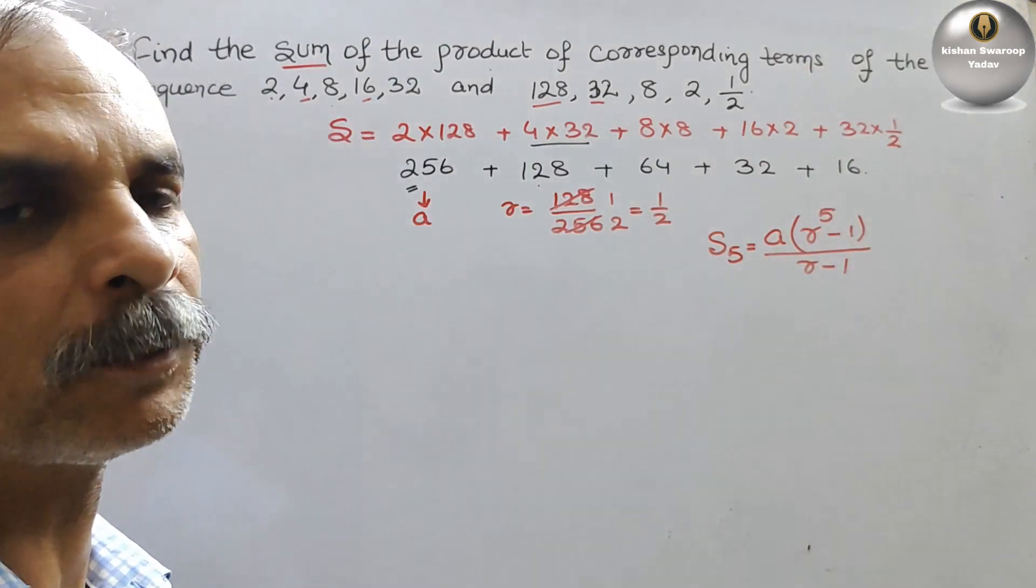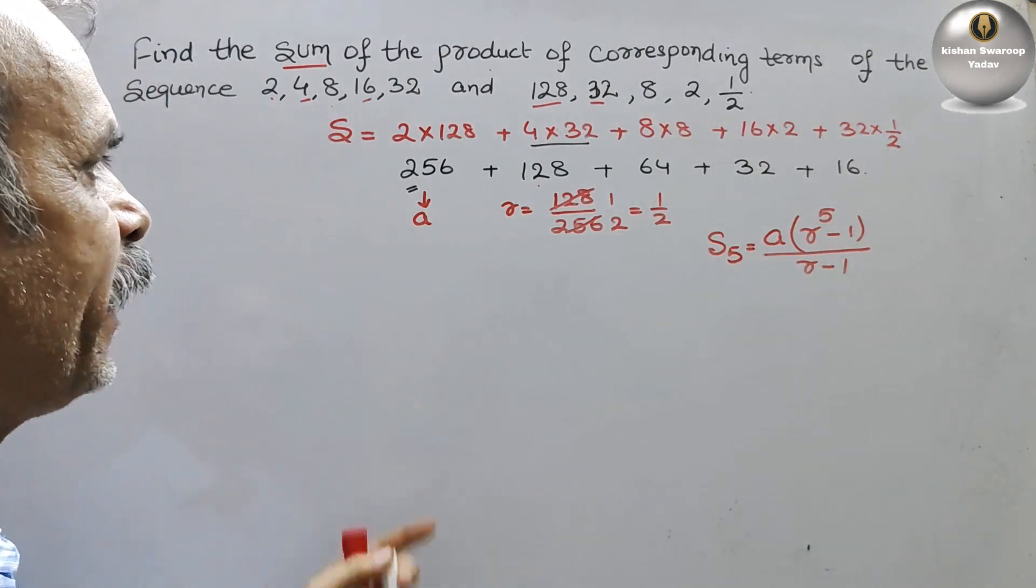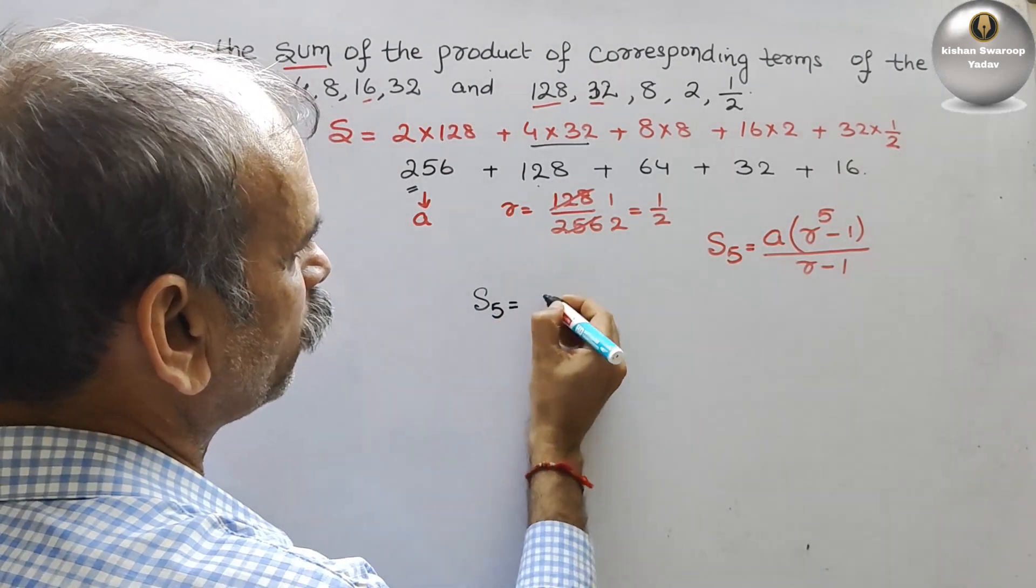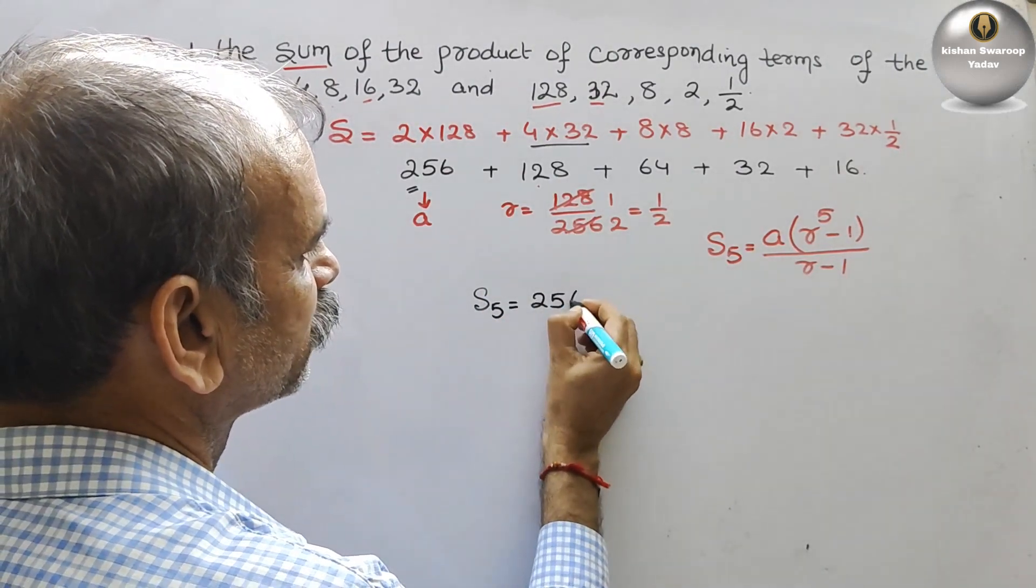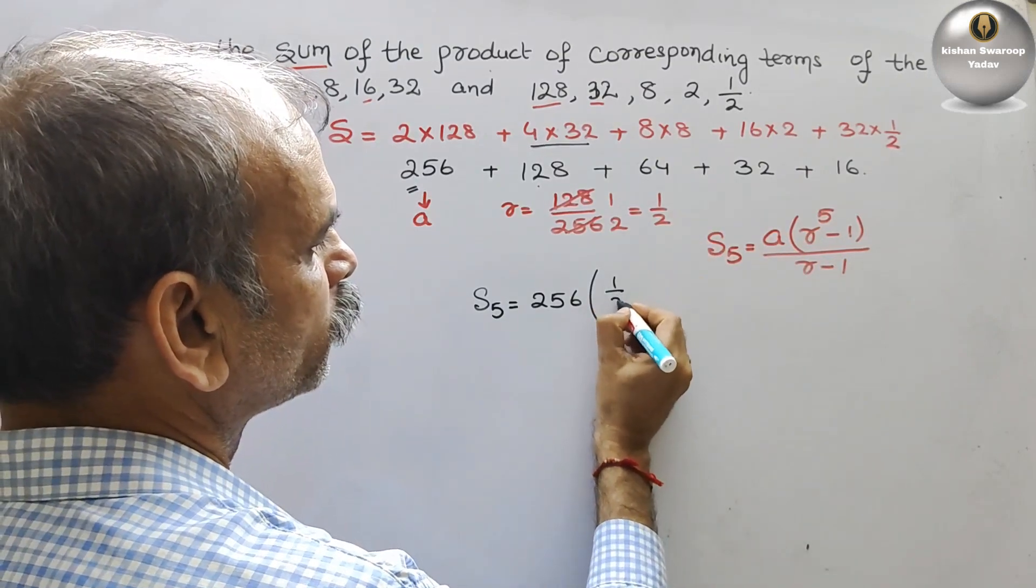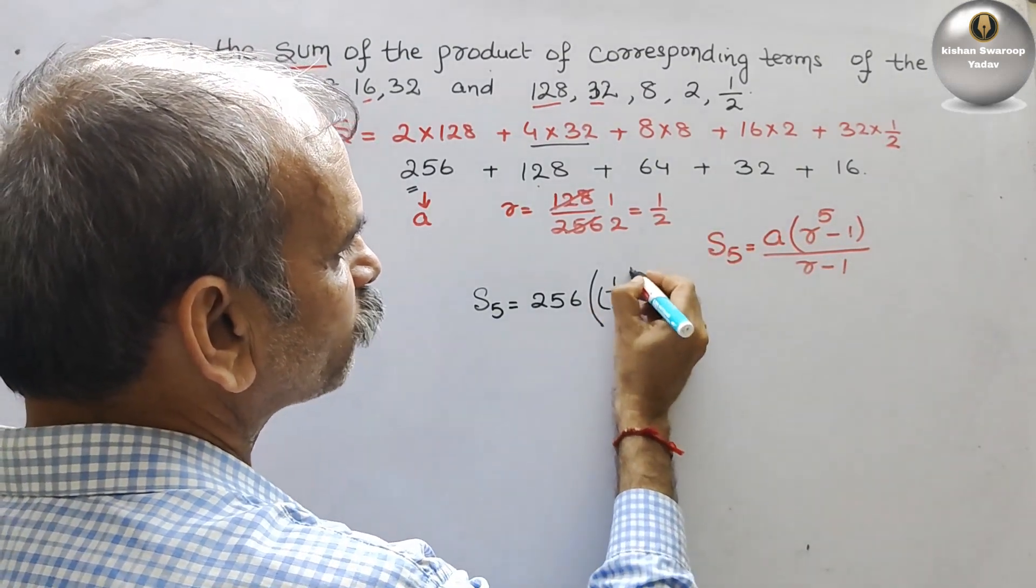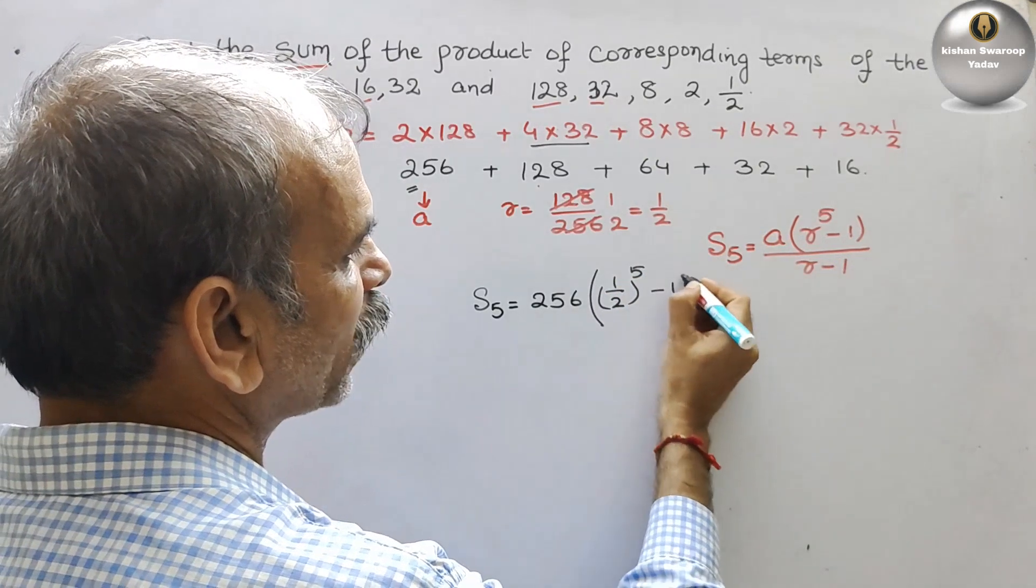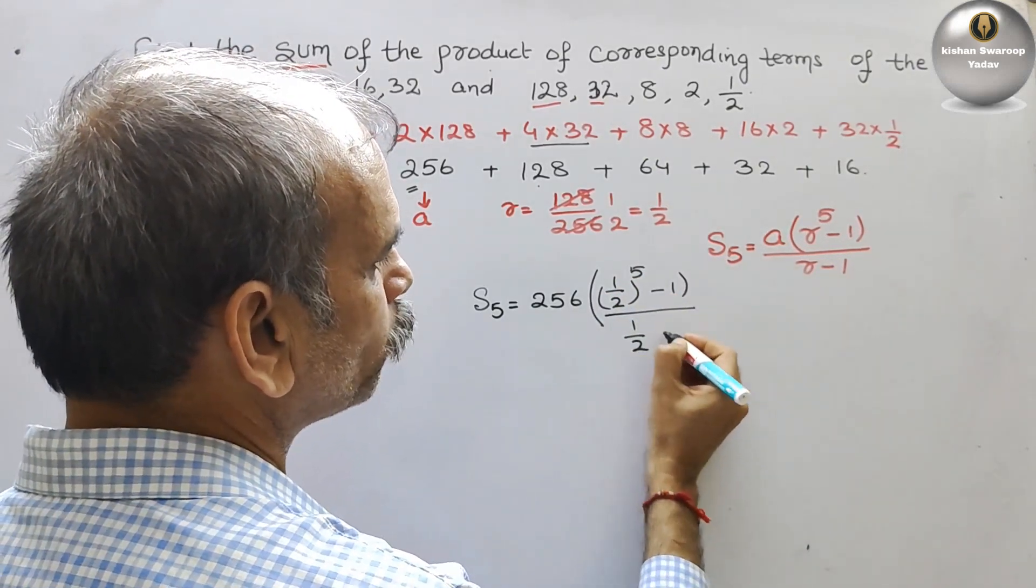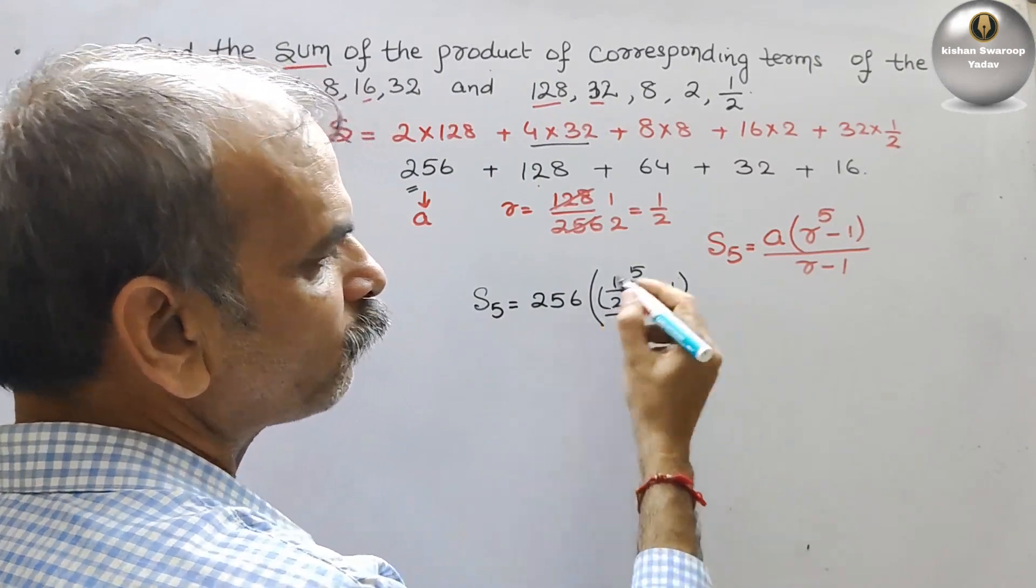Here we have to substitute. A is 256, R is 1/2, and the power is 5. So S5 = 256×((1/2)^5 - 1)/((1/2) - 1). We have to solve this.